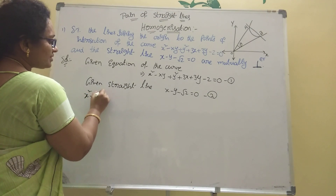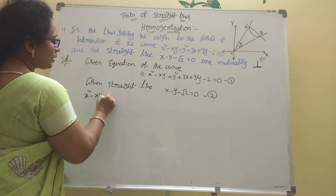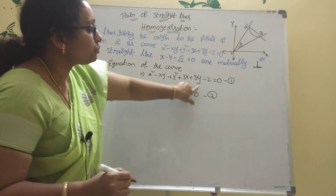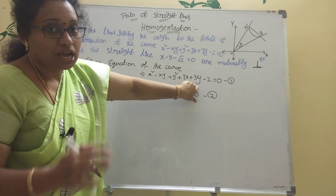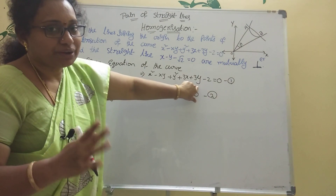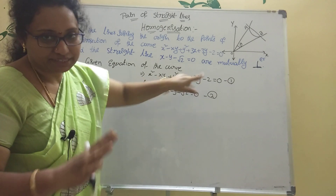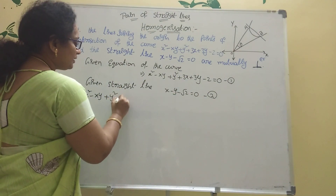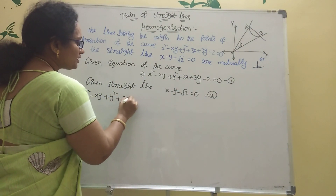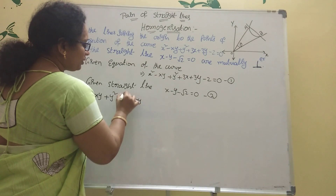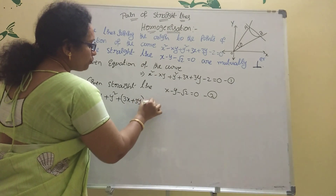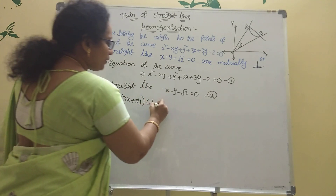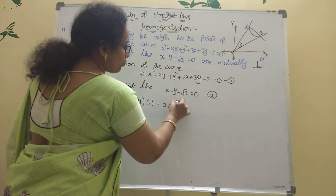Let's take a look at the first equation: x squared minus xy plus y squared. There are xy terms. Only x and y means x squared terms and xy terms are there. Then we have 3x plus 3y, into 1. That is x squared, and this is minus 2 into 1 whole squared.